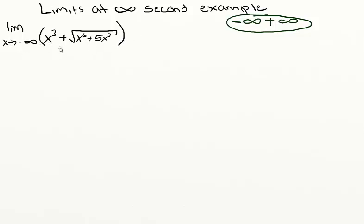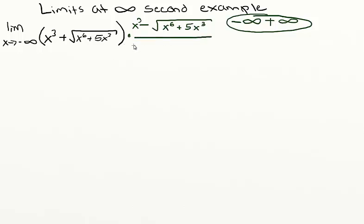The first thing we're going to want to notice is that we can multiply this expression by its conjugate to try and make it look nicer. So we're going to multiply by x cubed minus the square root of x to the 6 plus 5x cubed, and then divide by the same thing. Really what we're doing is multiplying by 1 in a special way so that it doesn't change the value of our limit, but changes the way it looks.